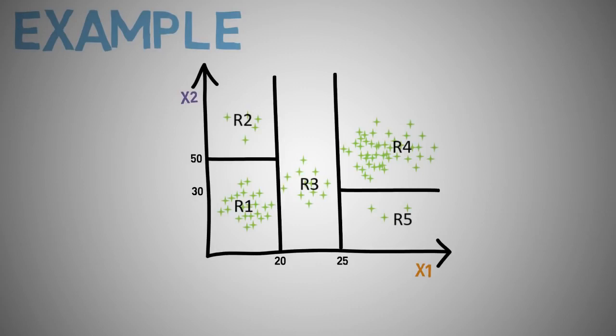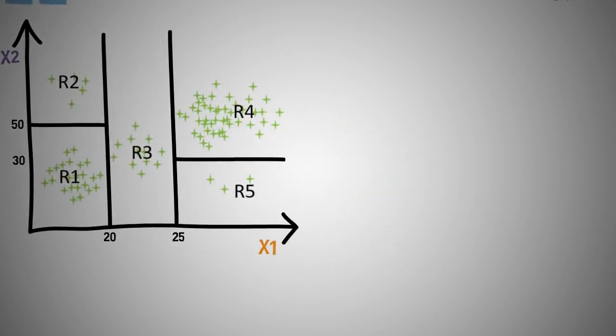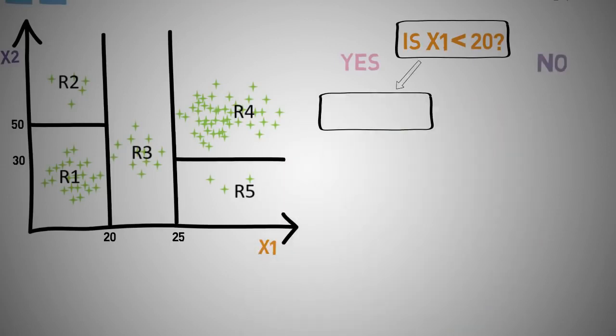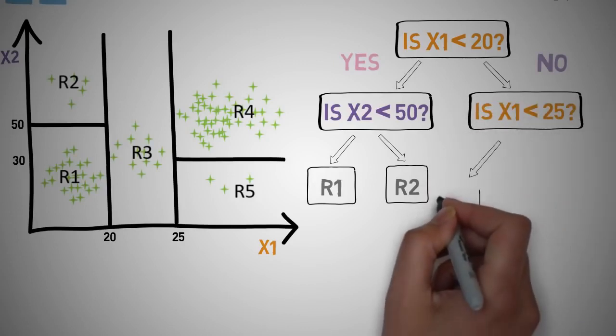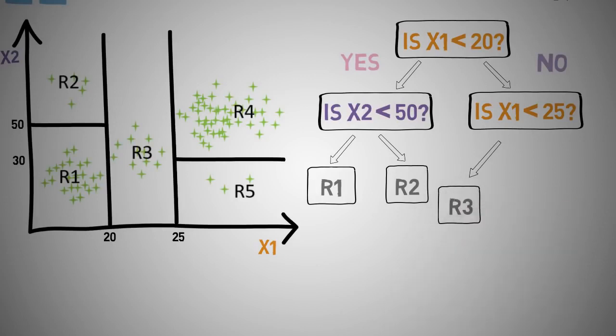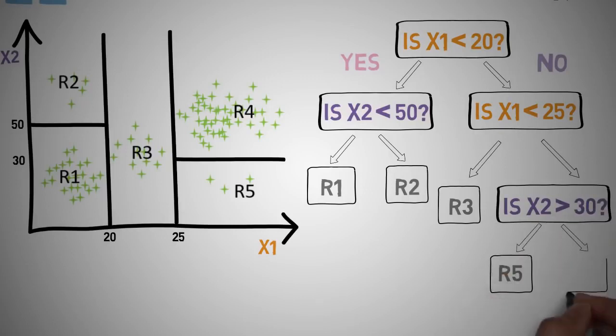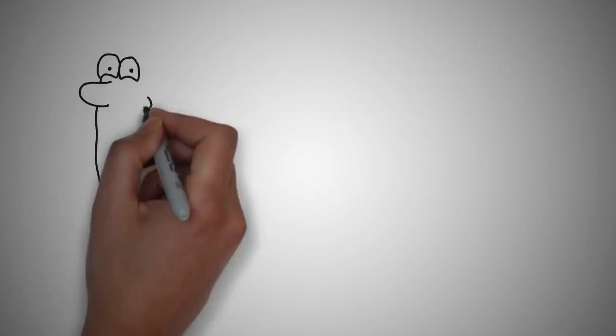We start off at our root node. We ask ourselves: is x1 less than 20? If yes, is x2 less than 50? If yes we have r1, if no we have r2. Then we go to our other branch and ask: is x1 less than 25? If yes then it's r3. If no, then we ask: is x2 less than 30? If yes we got r5, if no we got r4. As you can see, that is really simple.